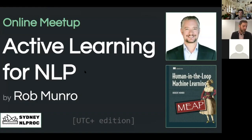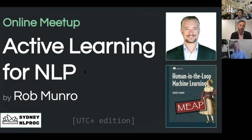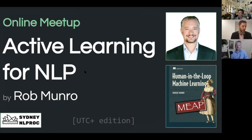Thanks everybody very much for joining us today. This is the 26th Sydney NLP Meetup and the very first fully online event. It's been exciting and a bit experimental. Thanks very much Rob for presenting today. My name is Ben Hashi. I'm head of Applied AI at Harrison and one of your hosts today. The excellent Stephen Hogg is the Sydney NLP co-organizer and will be facilitating the live Q&A after Rob's talk.